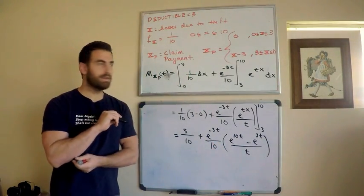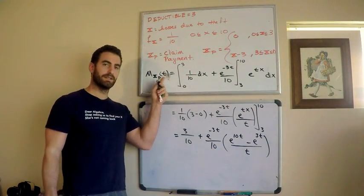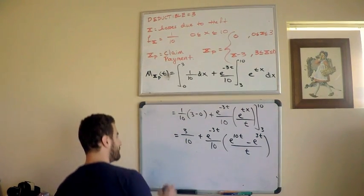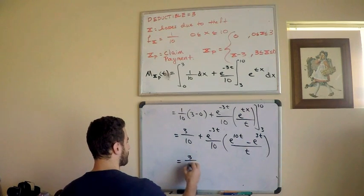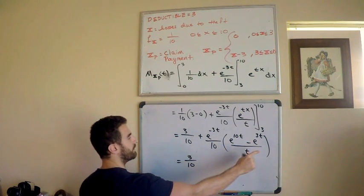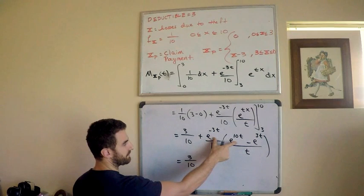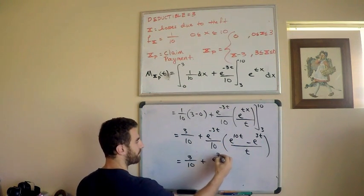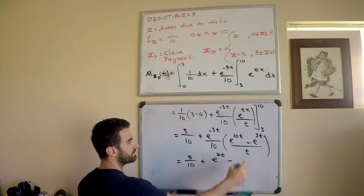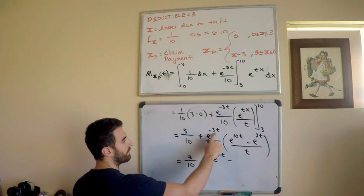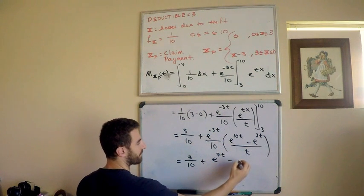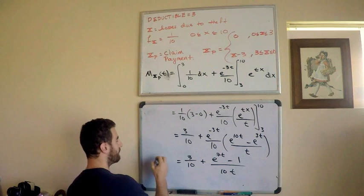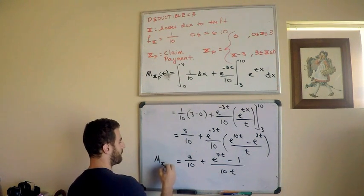I mean, the moment generating function is a function of t. We no longer have x. So, let's just clean it up slightly. So, this is equal to 3 tenths. Distribute this expression right here. And just use your properties of exponents here. 10 minus 3. So, 7. So, plus e to the 7t minus, well, this is going to be e to the 3t times e to the negative 3t. So, this is just actually 1 divided by 10t. And there is my moment generating function for the claim payment.